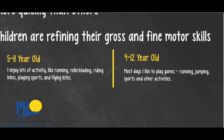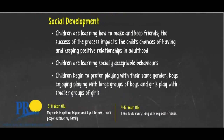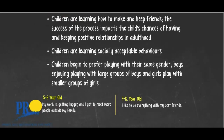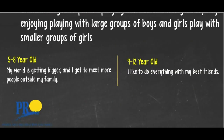Now let's look at social development. Children are learning how to make and keep friends, and the success of this process impacts the child's chances of having and keeping positive relationships in adulthood. Children are learning socially acceptable behaviors and begin to prefer playing with their same gender — boys enjoy playing with large groups of boys, and girls play with smaller groups of girls. Some children will need help and encouragement to join a group, while others do it quite easily. Children who experience positive relationships also show more resilience.